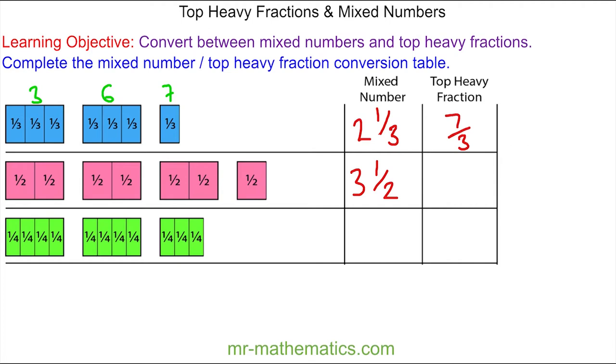As a top-heavy fraction, we can count the number of halves. So we have two, add another two which is four, six, and again seven. So three and one half is seven halves.